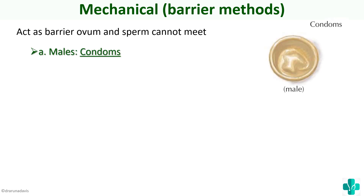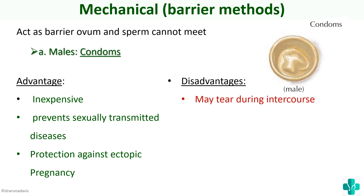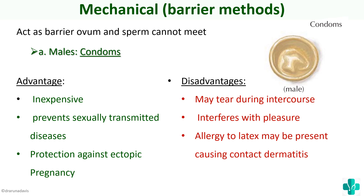In males, the main mechanical or barrier method used is condoms. The advantages of using condoms are that they are inexpensive, prevent sexually transmitted diseases, and protect against ectopic pregnancy. Disadvantages are that condoms can tear during intercourse, they interfere with pleasure, and allergy can cause contact dermatitis.